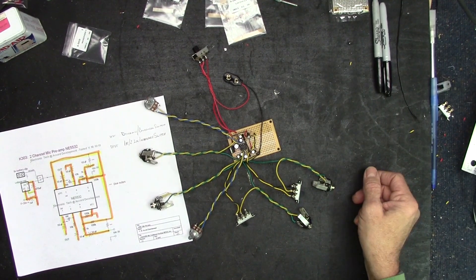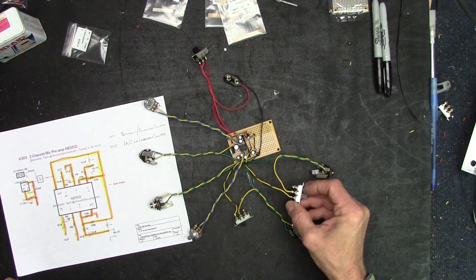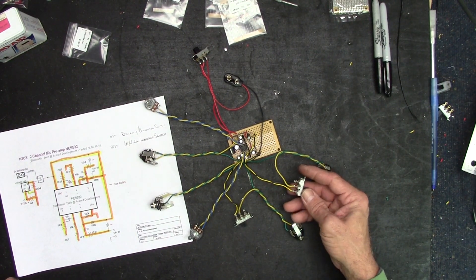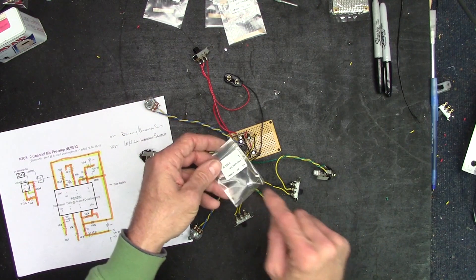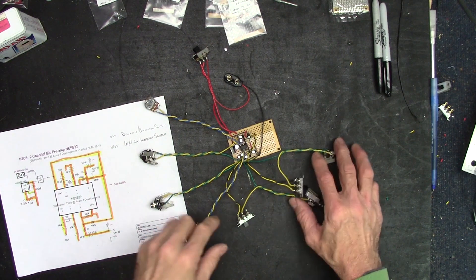Now I can start soldering bits and bobs together. There it is. Ready to test out. Here's the input side. I've got the switches for the high and low impedance, 1K or 2.2K. The microphone that came with it requires 2.2K. So when I test it out, I can use that. Right now they're set to high.